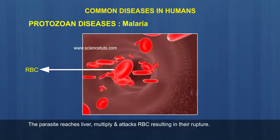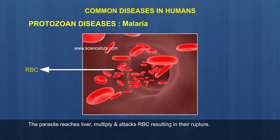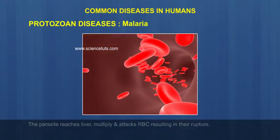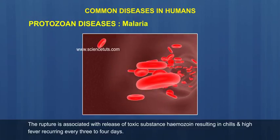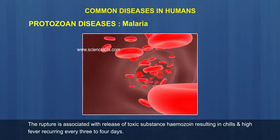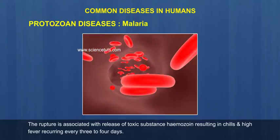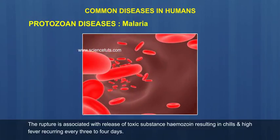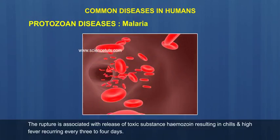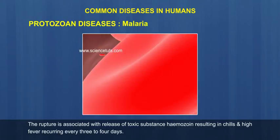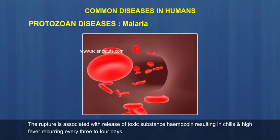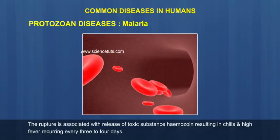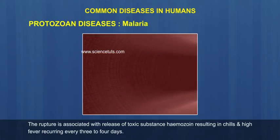The attack on RBCs results in their rupture. The rupture is associated with the release of a toxic substance called haemozoin, resulting in chills and high fever recurring every three to four days.